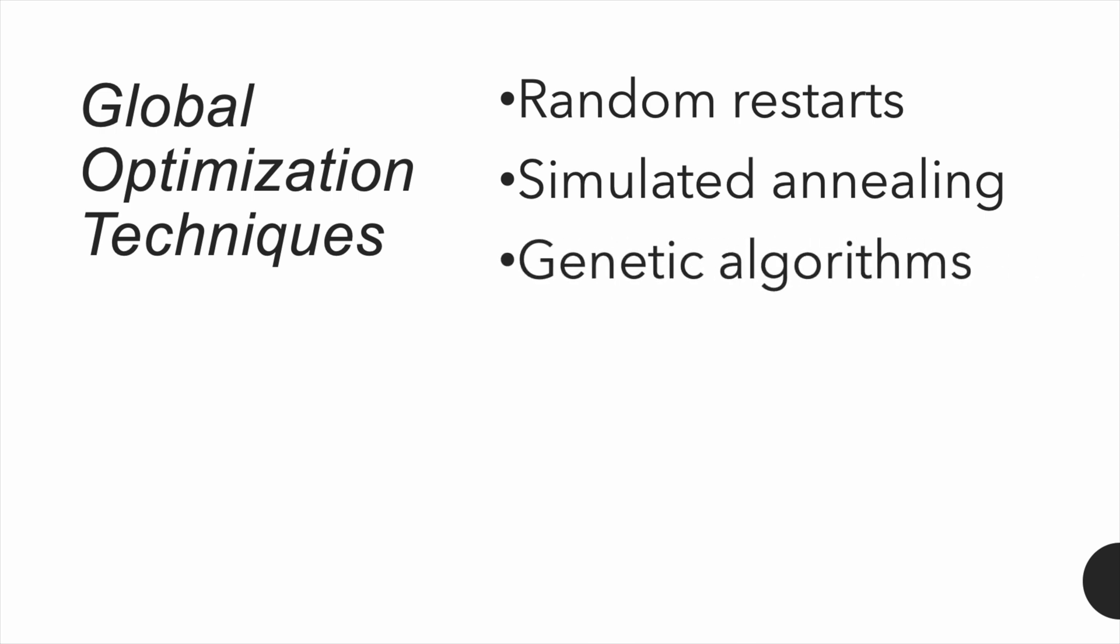Genetic algorithms. Inspired by evolution. These methods explore a wide solution space using operations like selection, crossover, and mutation. They are especially useful for complex or noisy optimization problems. Grid search and random search. These are simple but effective methods for small problems. They work best when the input space is limited and well-defined. These techniques are useful when the function is non-convex, or when we suspect multiple local optima.